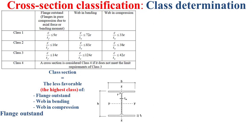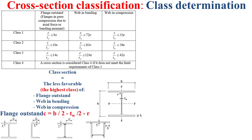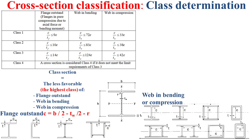C is determined based on the dimensions of the cross-section. For the case of flange outstand, C = B/2 − TW/2 − R, where B is the width of the cross-section, TW is the thickness of the web, and R is the root radius. For the case of web in bending or compression, C = H − 2·TF − 2·R, where H is the height of the cross-section, TF is the thickness of the flange, and R is the root radius.